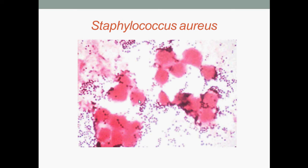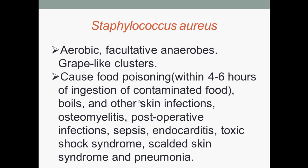Staphylococcus aureus under microscopic view. Staphylococcus aureus are aerobic facultative anaerobes and they form grape-like clusters. They cause food poisoning within 4-6 hours of ingestion of contaminated food, boils and other skin infections, osteomyelitis, post-operative infections, sepsis, endocarditis, toxic shock syndromes, scalded skin syndrome, and pneumonia.